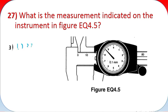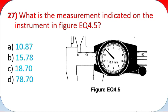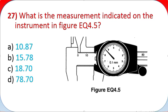Question 27: What is the measurement indicated on the instrument in figure EQ 4.5? A - 10.87, B - 15.78, C - 18.70, D - 78.70.